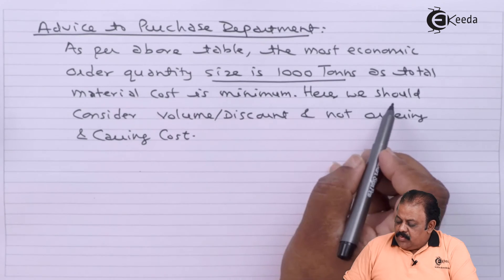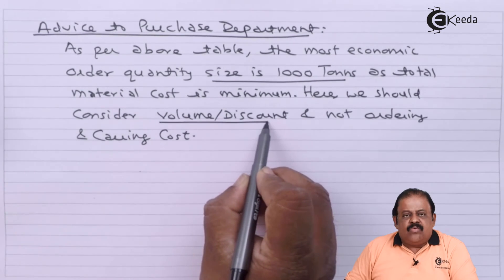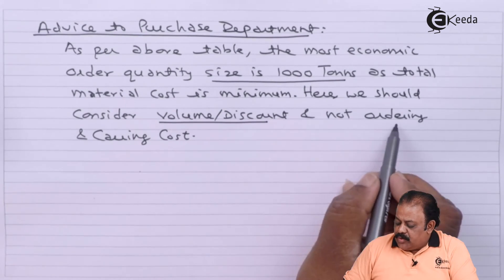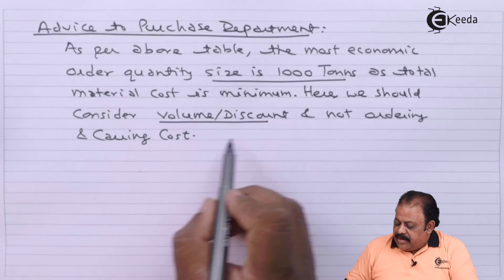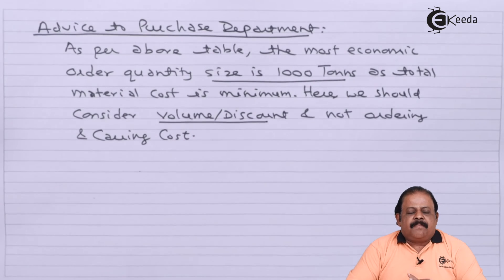The economic order quantity size is 1000 tons as total material cost is minimum. Here we should consider volume discount, and therefore we are required to ignore just the ordering cost and carrying cost alone — the purchase cost must be included in the total cost comparison.